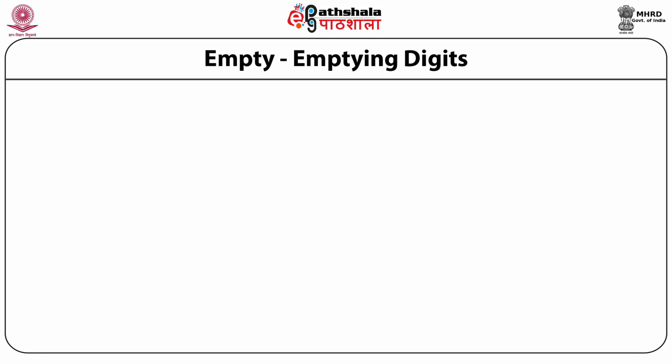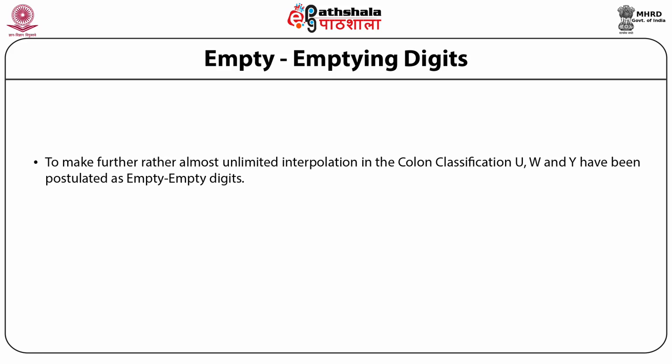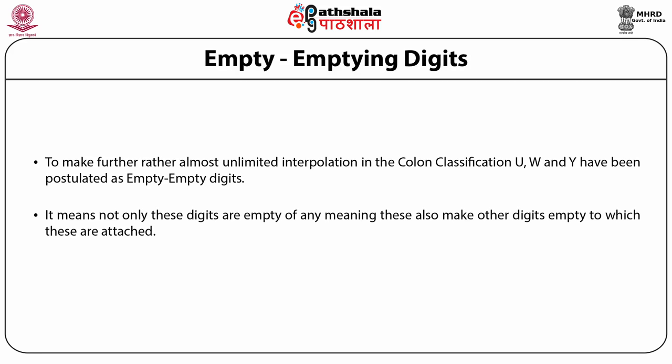Extending the concept of empty digits, Ranganathan coined another device called empty-emptying digits. To make further — almost unlimited — interpolation in the Colon Classification, u, w and y have been postulated as empty-emptying digits for arrays next to the main class arrays. It means these digits u, w and y will not be used in the next class arrays, and not only are these digits empty of any meaning, but they also make other digits empty to which they are attached — they eat away their meaning and create a new meaning for the two-digit notation.